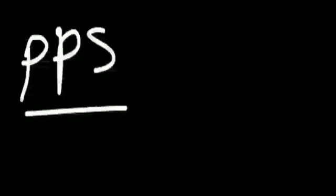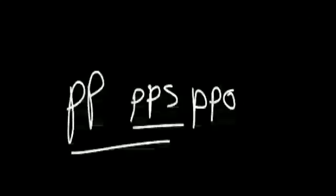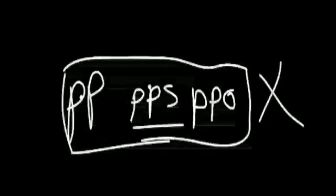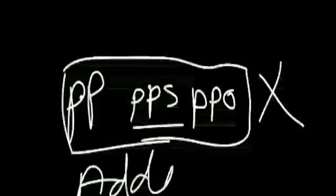PPS — Polyphenylene Sulphide. PPO — Polyphenylene Oxide. PP — Polypropylene. These do not increase properties, especially when it comes to additives.